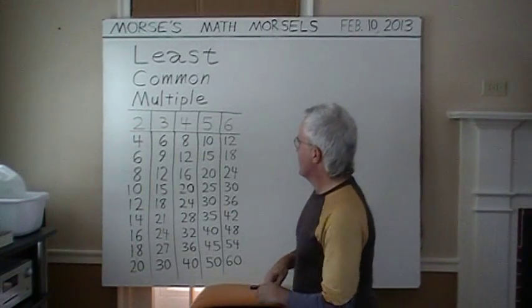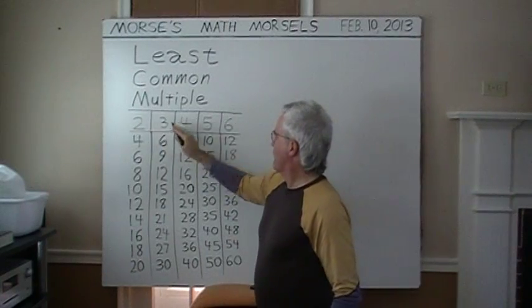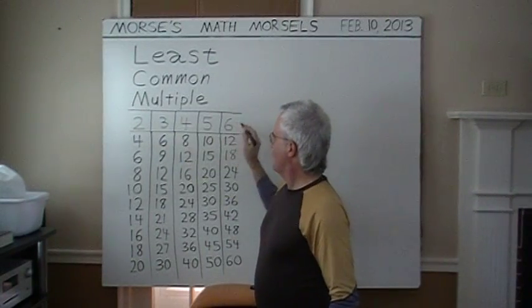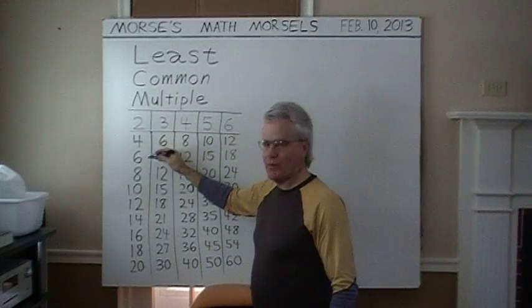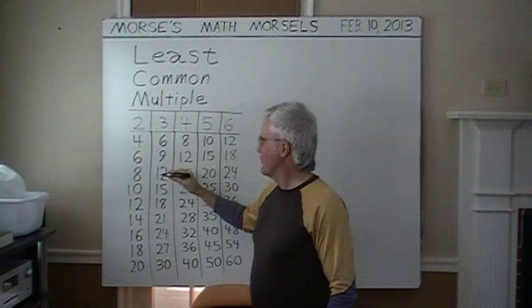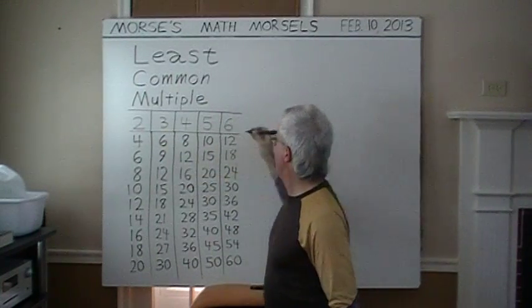To find least common multiples of these numbers within the squares here, just check each column for where a number occurs two or more times. For instance, what is the LCM of two and three?